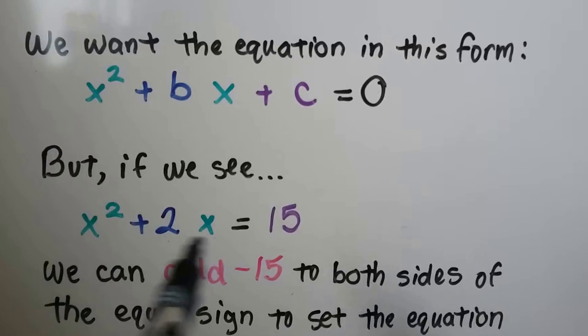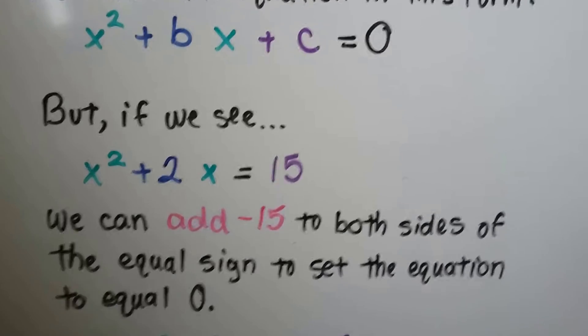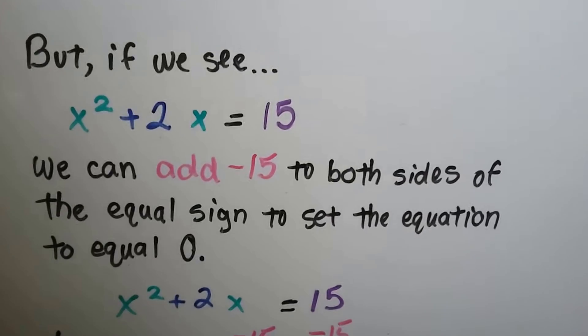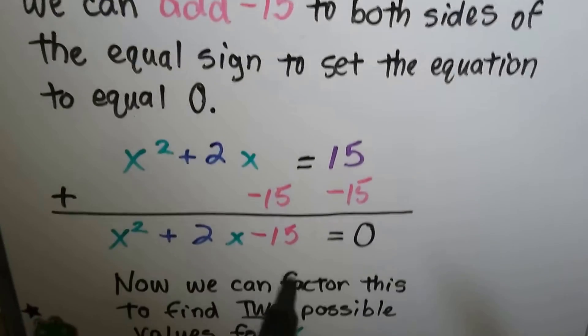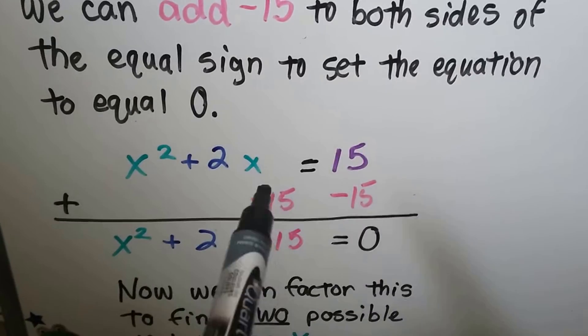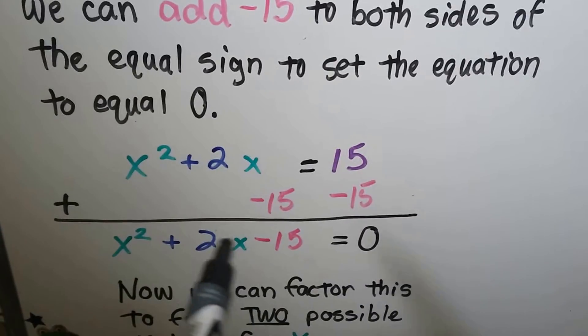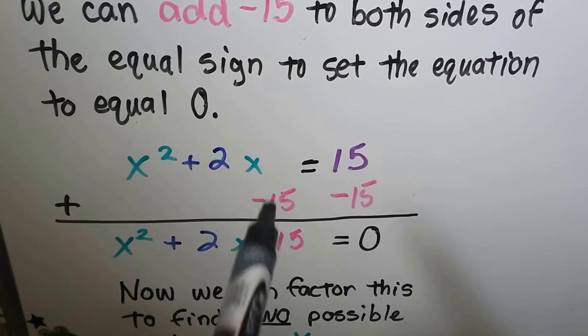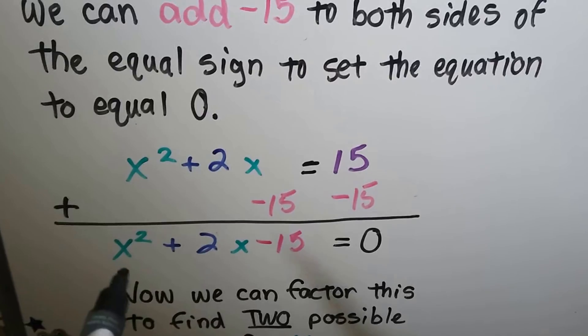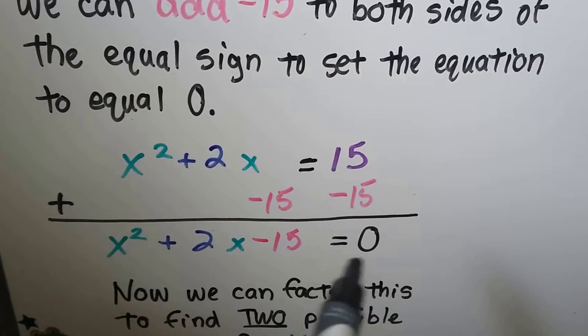If we see it like this, where it equals a number, we can add a negative 15 to each side of this equal sign to set the equation to equal zero. We've done this before, where we've added a negative number and created zero pairs. Now we could just add that negative number and tack it onto the bag here. We get x squared plus 2x minus 15 equals zero.